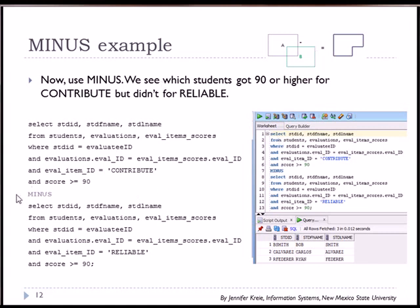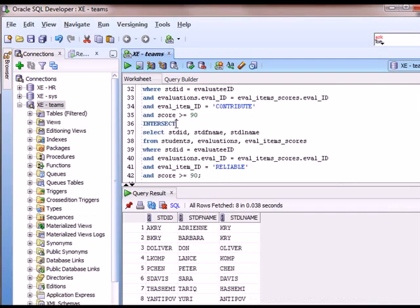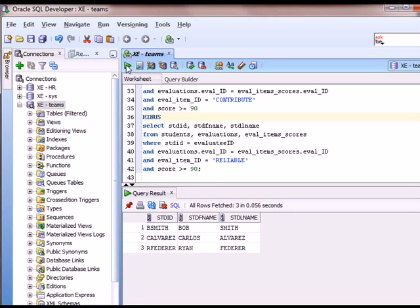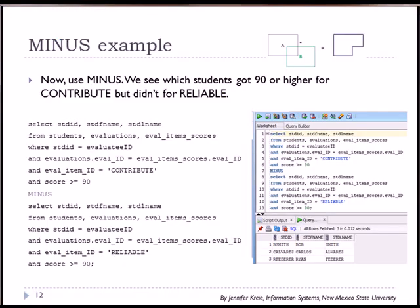Now when I switch to minus, I'll change the set operator to minus. We will find out how many people got contribute 90 or greater that did not get 90 or greater for reliable. So I'm going to change the intersect to minus and run that query. And I see three. One of the things to keep in mind when you're using minus is that the order in which you list the SQL statements makes a difference. The first statement is the one from which you will subtract data that comes up in the second statement. So if I flip these, I would get different output most likely.